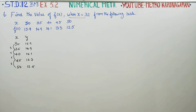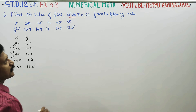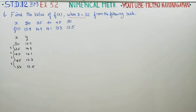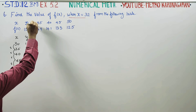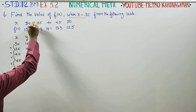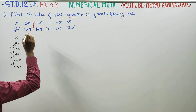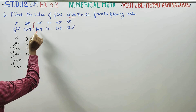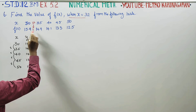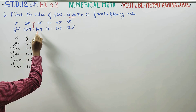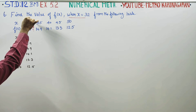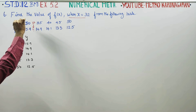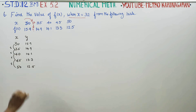We need to find f(x) when x is equal to 32. Since x = 32 lies between 30 and 35, the nearest values are y₀ = 15.9 and the next value 14.9, so we use Newton's Forward Interpolation Formula.